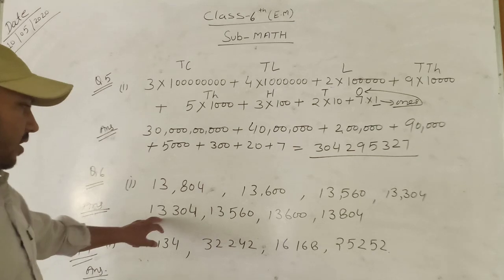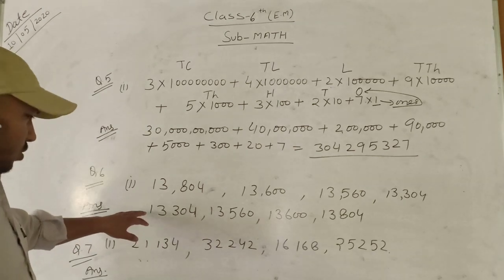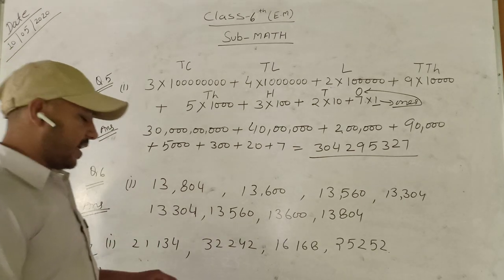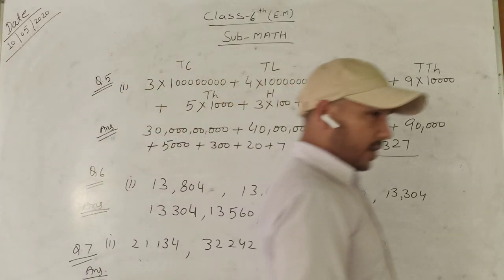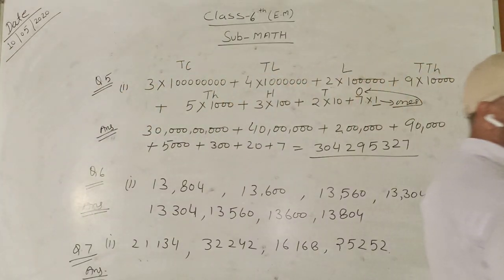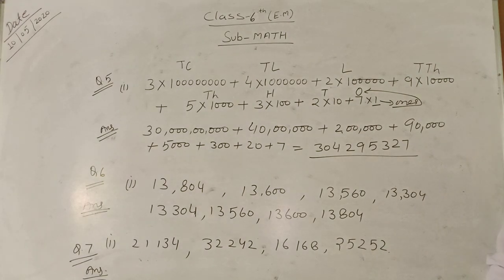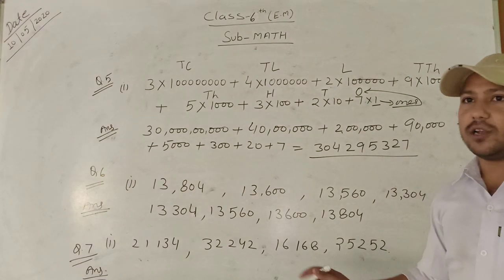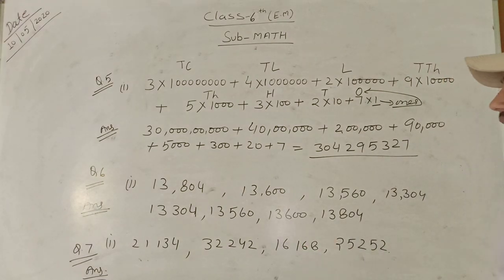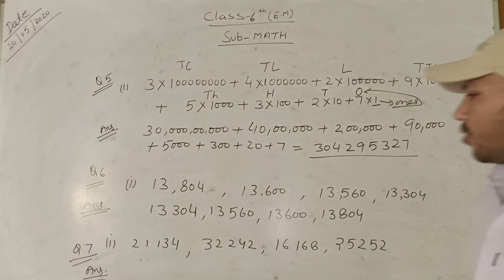So this is the ascending order. Ascending order means arrange the following numbers in lowest to highest priority: 13,304 → 13,560 → 13,600 → 13,804.